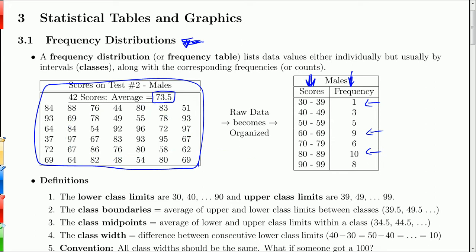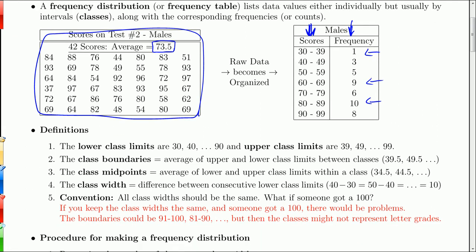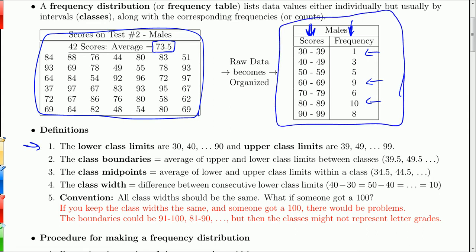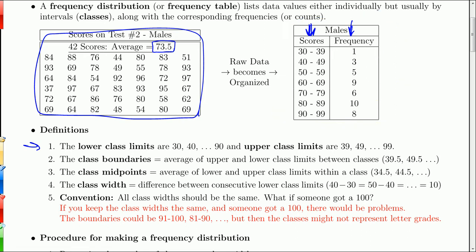So that's a frequency distribution. There are some things about it that are worth knowing — some parts. This whole table is the frequency distribution. The lower class limits are basically these values: 30, 40, 50, 60, 70. And the upper class limits are 39, 49, 59, 69 — fairly self-explanatory. Those are the class limits.